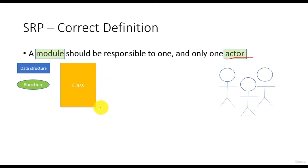As per object-oriented design, we divide the complete functionality of the software into multiple classes. SRP guides us to check if the classes we have selected need to be modified or split further. And this splitting helps us in multiple ways, as we will see further.